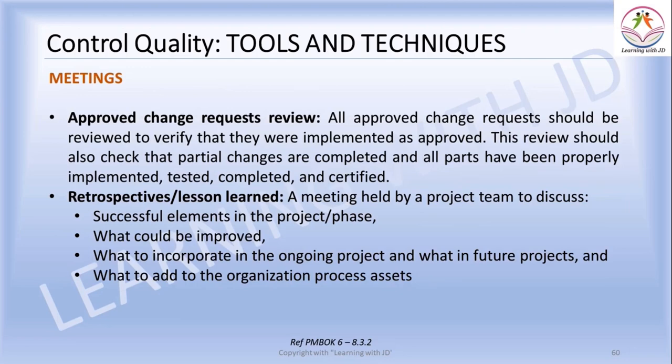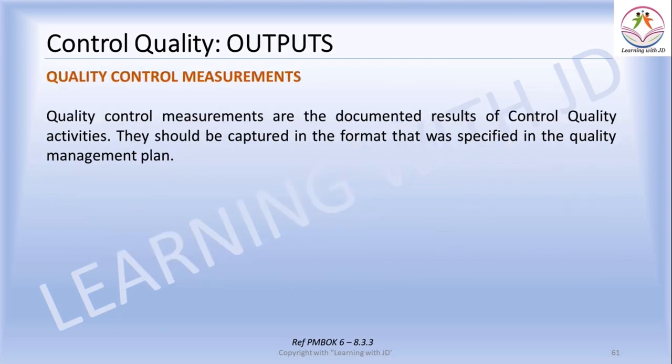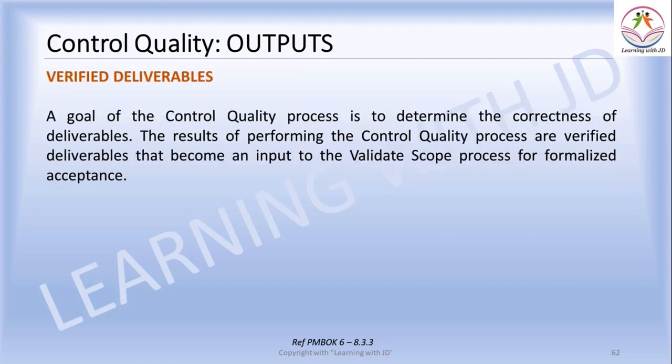Meetings — you need to talk to your project team and your stakeholders. Now let's see what are the outputs of the control quality check. Control quality measurements are the documented results of control quality activity. They should be captured in the format specified in the quality management plan, consistent with your organizational process. Your verified deliverables are another output.